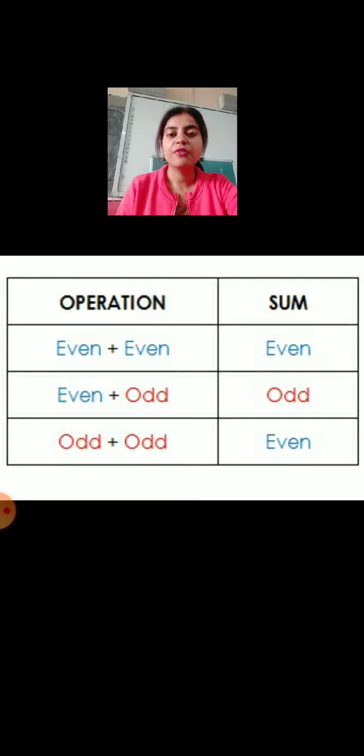Next, if we have two odd numbers as our addends, then the sum will be an even number.